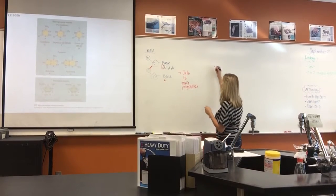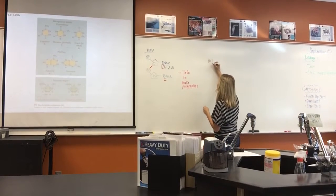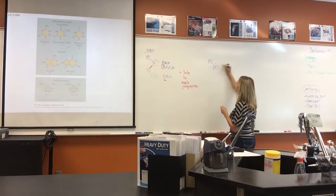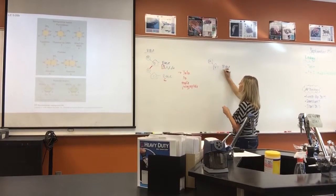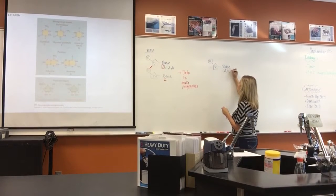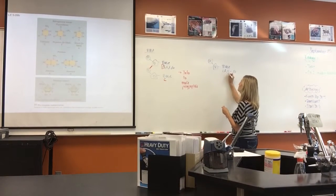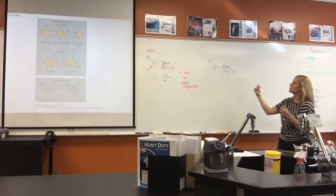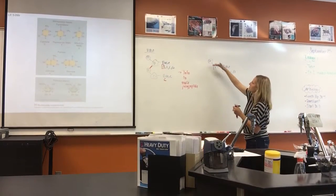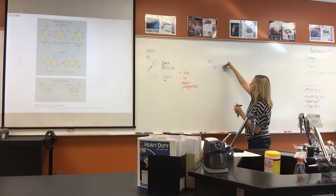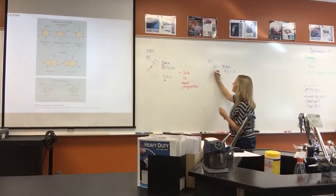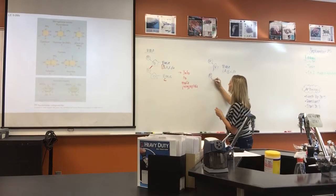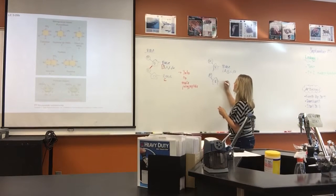RNA has the phosphate and a pentose sugar, but the sugar is ribose. The bases for RNA are A, U, C, and G — so no thymine, but adding uracil. There are four nucleotides to choose from, and they are hooked together to make the RNA chain.